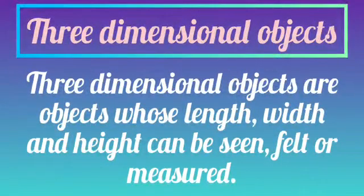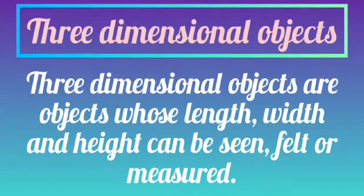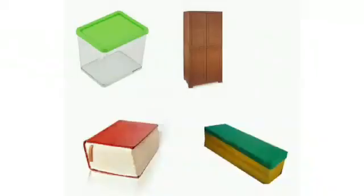Three-dimensional objects are objects whose length, width, and height can be seen, felt, or measured. It means objects that have length, breadth, and thickness are three-dimensional objects. For example, books, glasses, and tables are some three-dimensional objects.